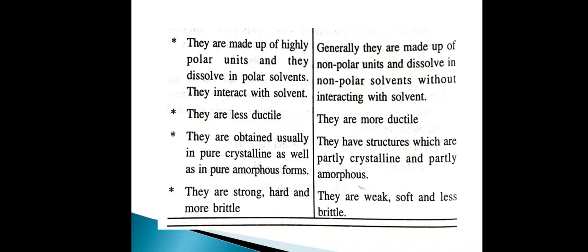Inorganic polymers are obtained usually in pure crystalline or pure amorphous state, while organic polymers have structures which are partially crystalline and partially amorphous. Finally, inorganic polymers are strong, hard, and more brittle, while organic polymers are weak, soft, and less brittle. These are the differences between organic and inorganic polymers.